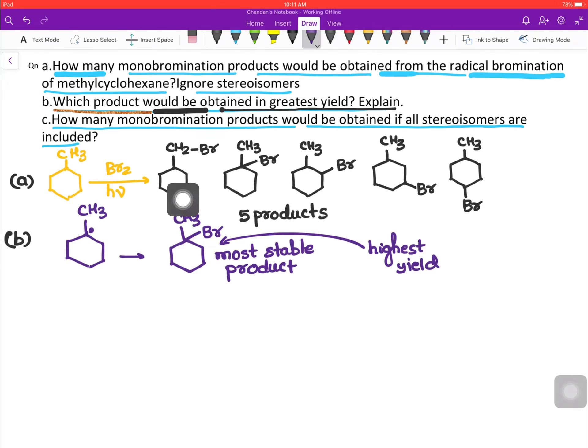So this is the product obtained in highest yield. And now the third part: how many monobromination products would be obtained if all stereoisomers are included? So basically we have to count.